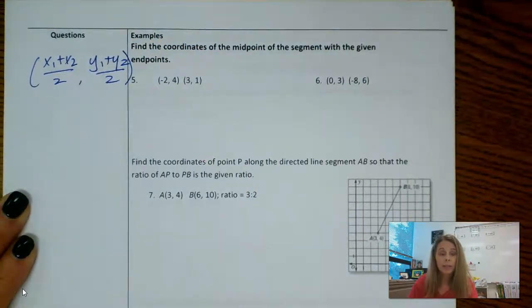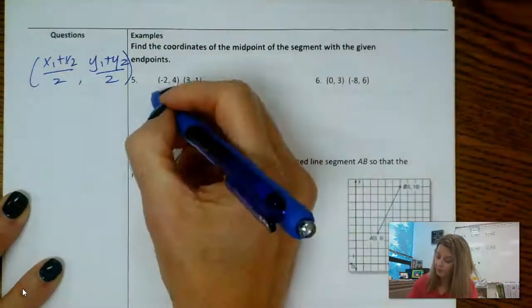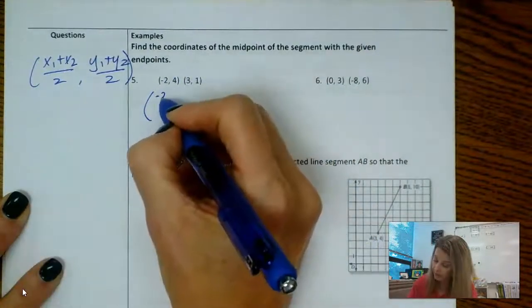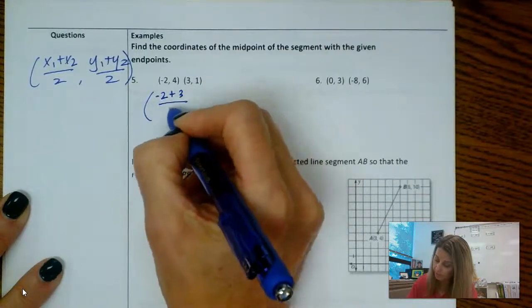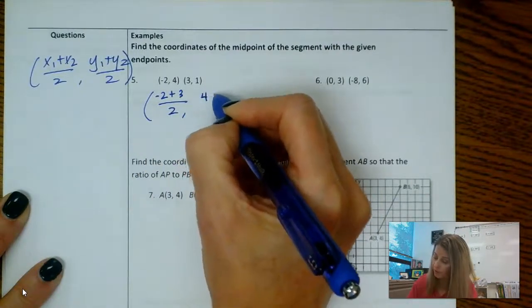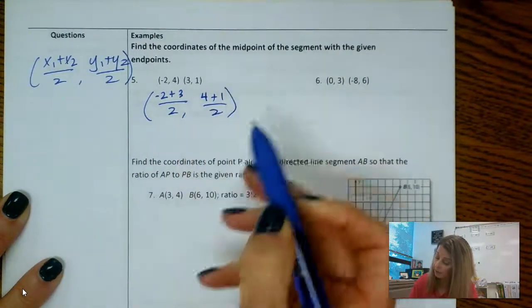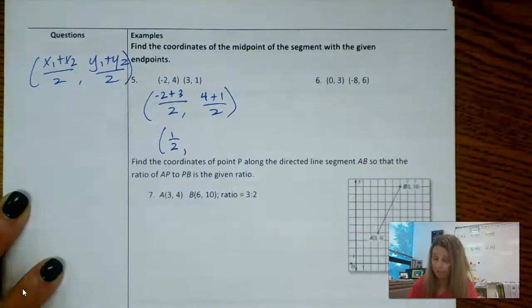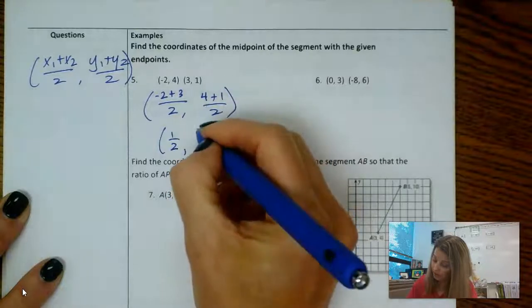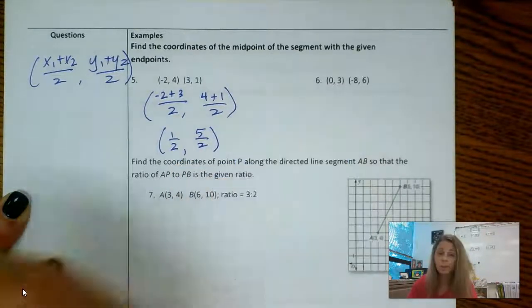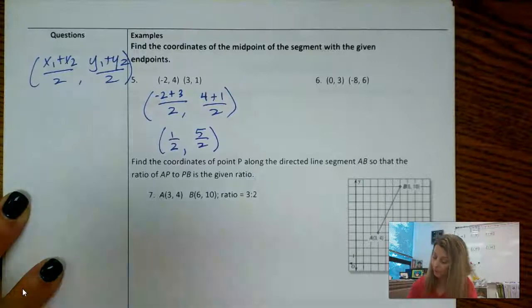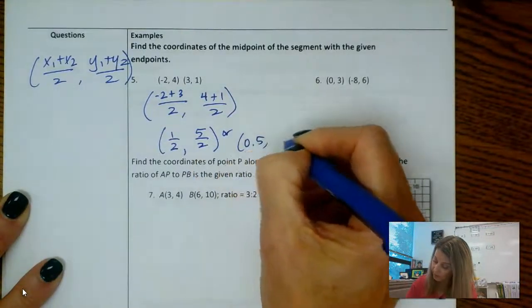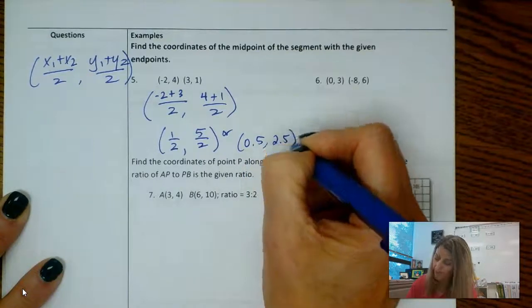Okay, you are simply running through midpoint formula, so you are adding the X's, dividing by 2, adding the Y's, dividing by 2. So I'm going to just plug in. On that first one, I get 1 half—if you wrote 0.5 that's okay—and then 5 halves. You could have also written 2.5. I'm going to say here, or 0.5, 2.5, that would be just fine.